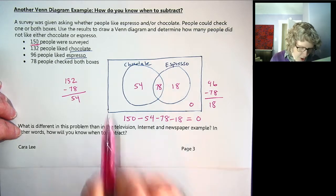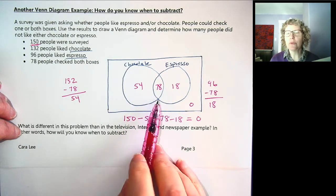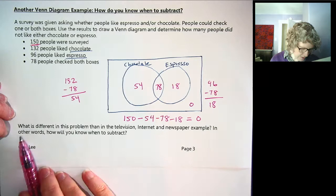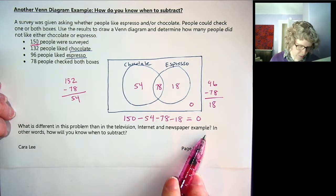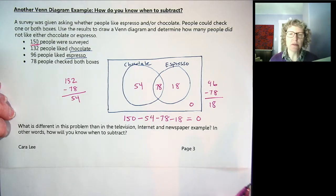So in this problem we had to subtract. So a question I have for you is, what's different in this problem than in the television, internet, and newspaper example? In other words, how will you know when to subtract?